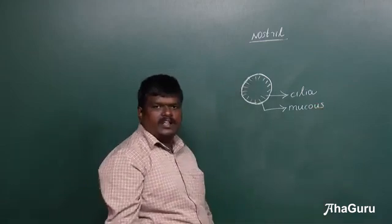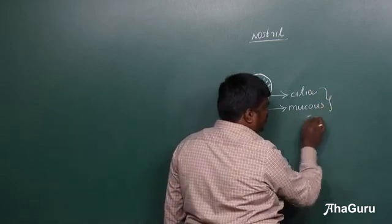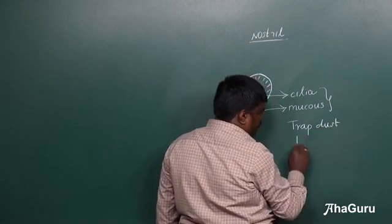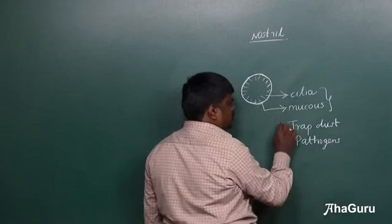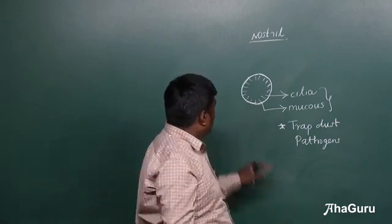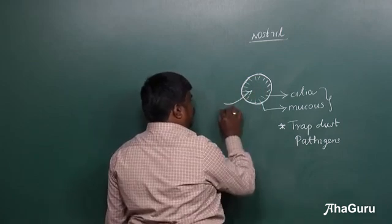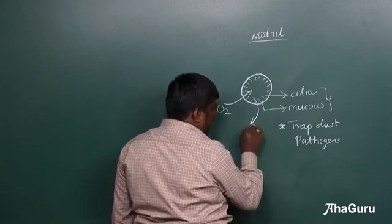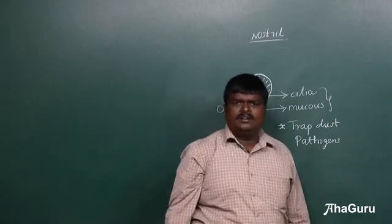The function of the cilia and the mucus layer is to trap dust particles and pathogens. Oxygen enters through the nostril, and similarly carbon dioxide moves out through the nostril.